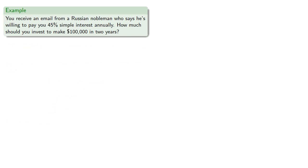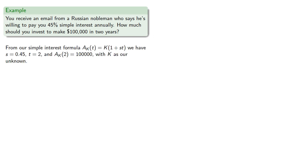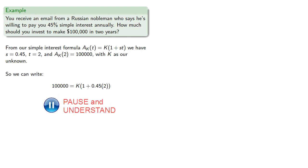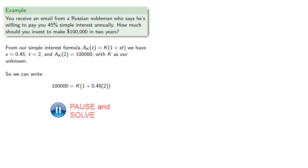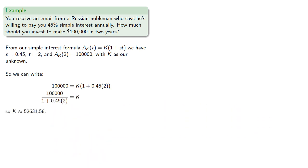Just today I got an email from a Russian nobleman who says he's willing to pay 45% simple interest annually. How much should we invest to make $100,000 in two years? From our simple interest formula, the interest rate is 0.45, the time is 2, and after two years we want the amount to be $100,000, with K the principal as our unknown. Solving, this means you should probably invest nothing — because something that sounds too good to be true probably is.